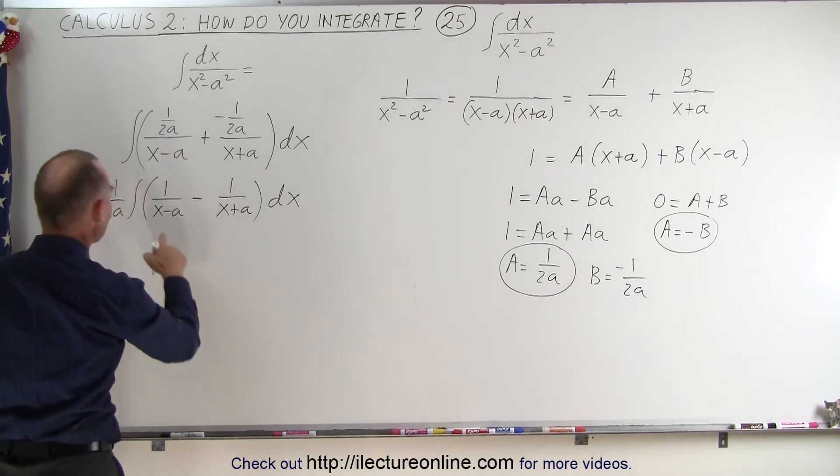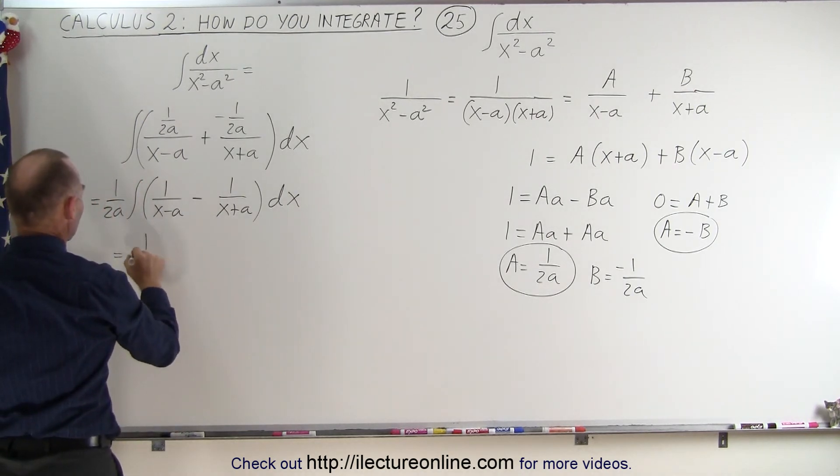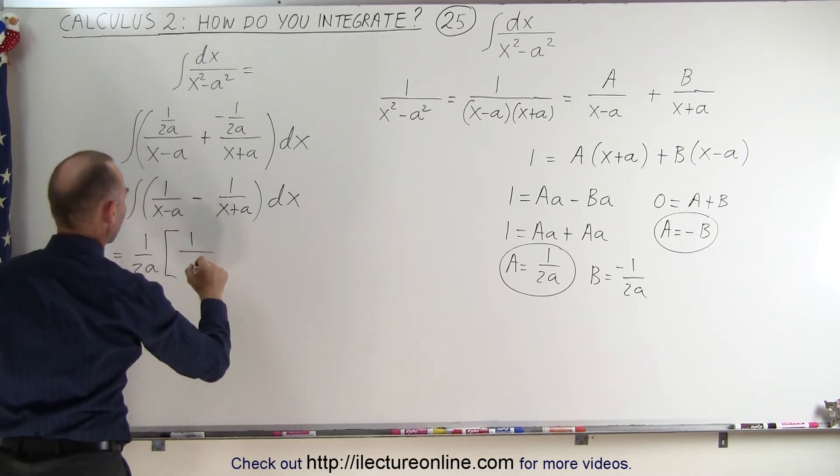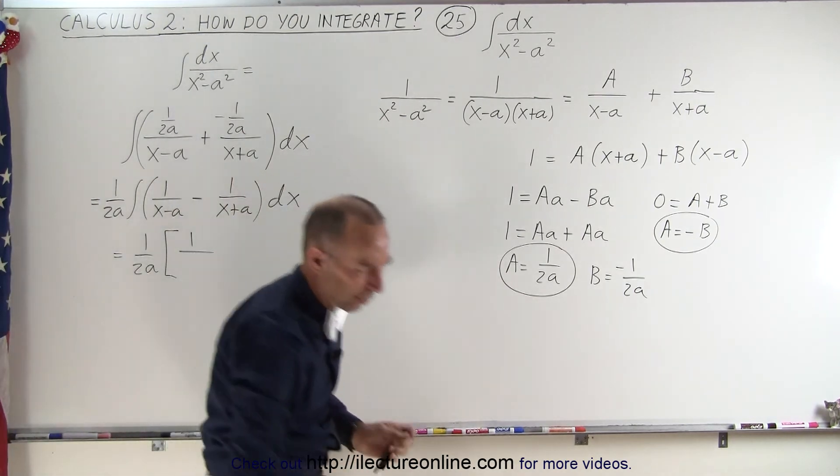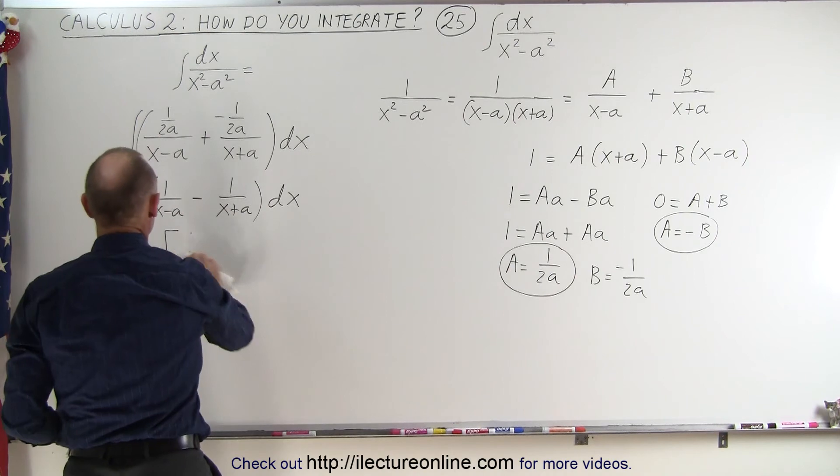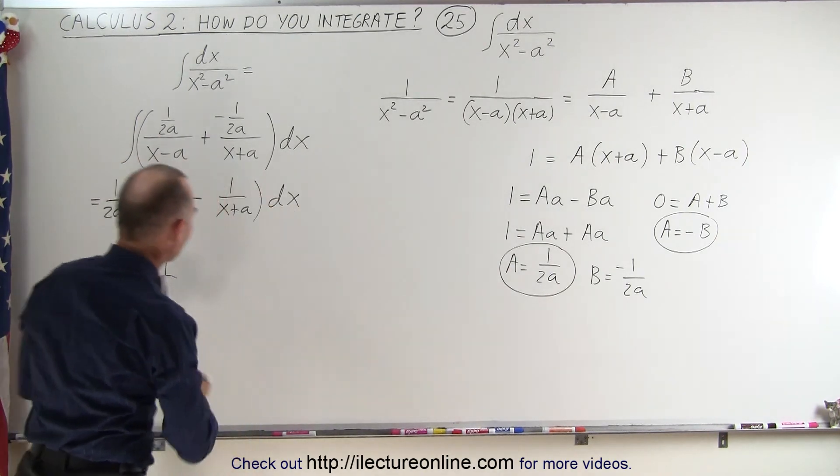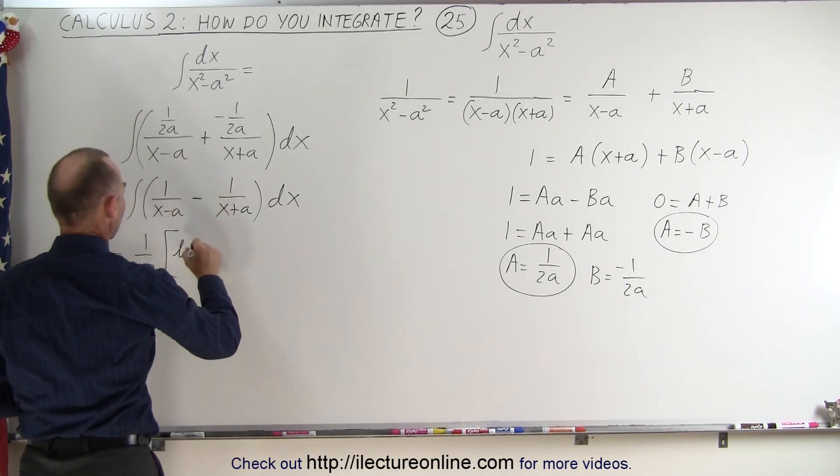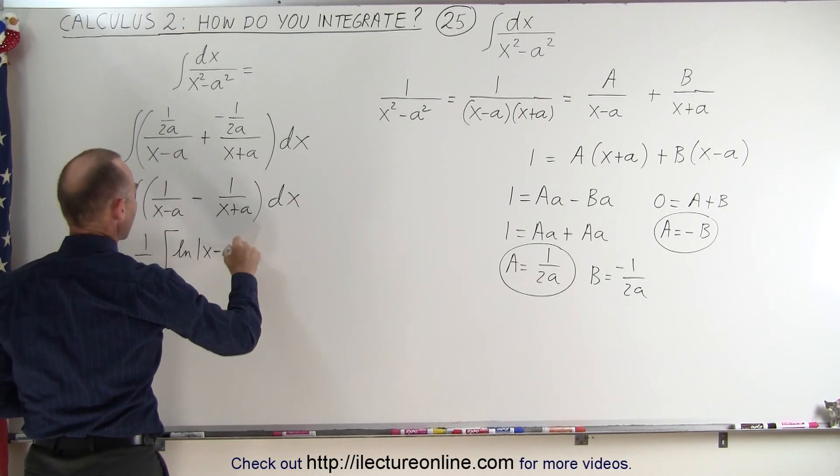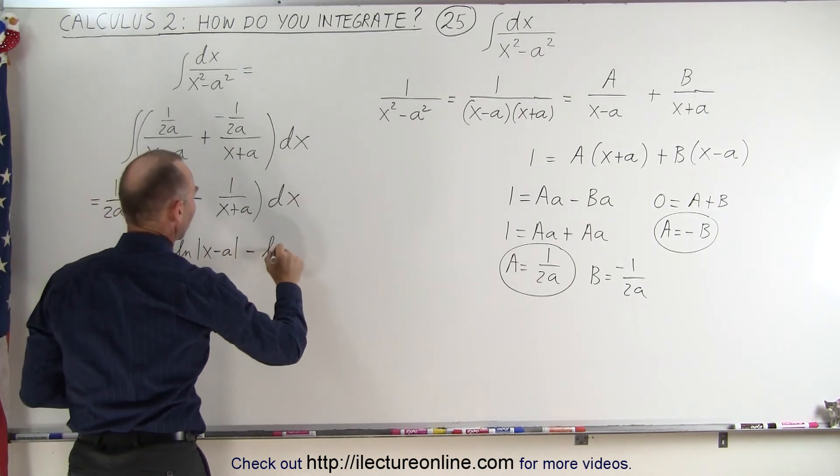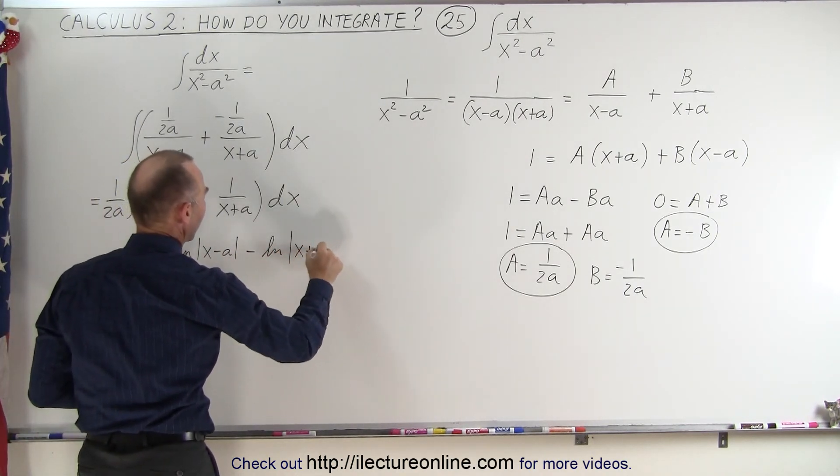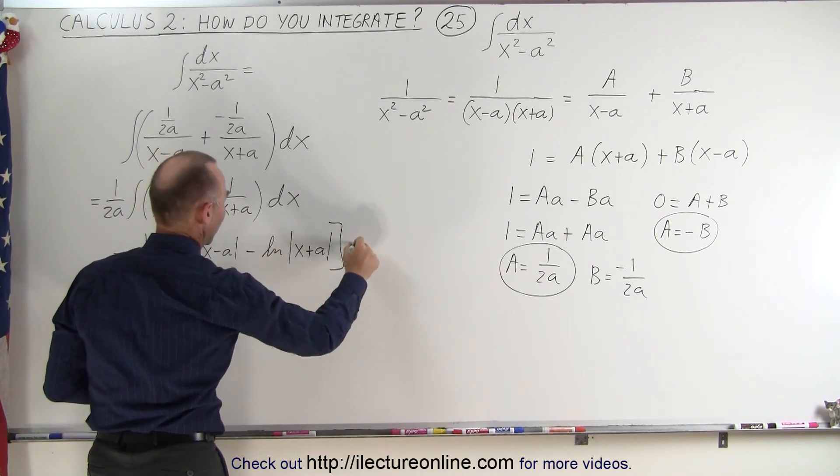This simply becomes the natural log of each. So this becomes equal to 1 over 2a. I have to take the integral here, so that becomes the natural log of x minus a minus the natural log of x plus a, and we have a constant of integration.